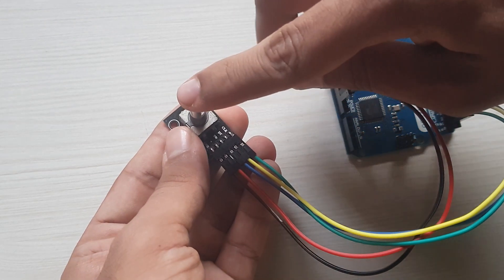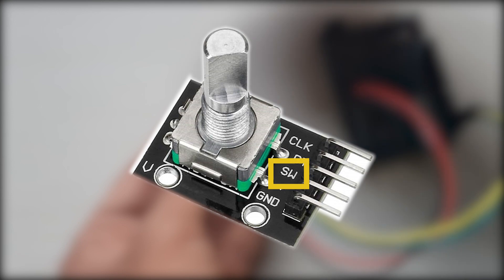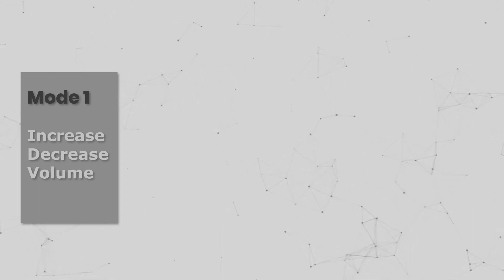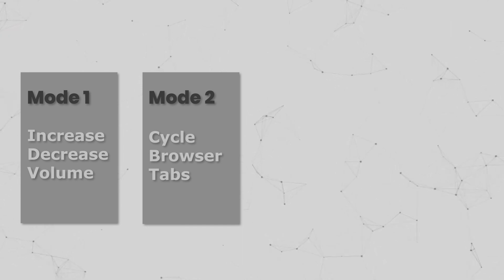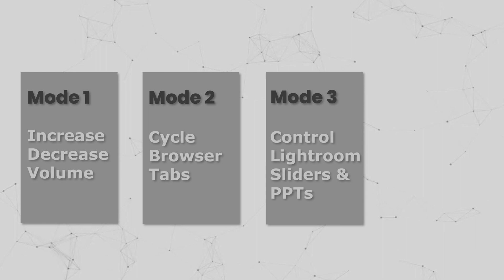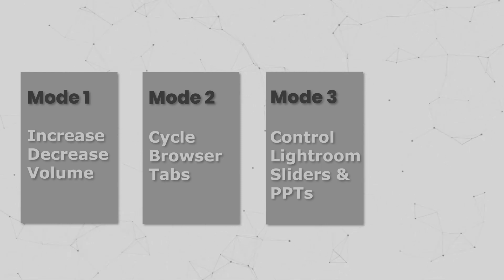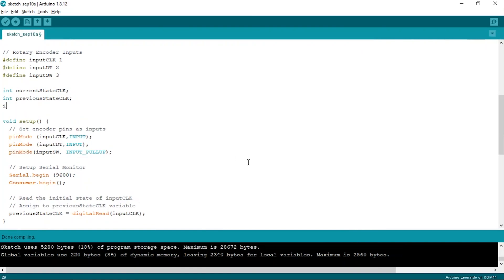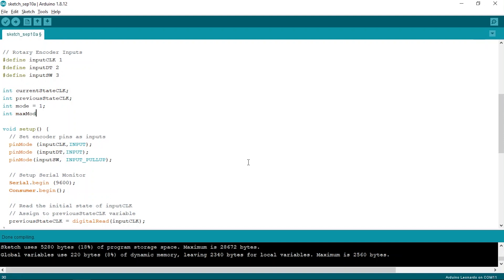The rotary encoder also has a button in it which can be pressed, and the value of this button can be read from the SW pin, which we have also defined in our code. So now let's define some different modes for our encoder. By default, mode 1 will be selected, which will increase or decrease the volume. When we press the button on the encoder, mode 2 will be selected, in which we will change the tabs of the browser. Then when we press the encoder button again, mode 3 will be selected, where we will add the functionality to control sliders in Lightroom and change slides in PowerPoint. And finally, in mode 4, we will increase and decrease the size of our brush in Photoshop. So back in our code, let's define an integer variable called mode to store the currently selected mode — initially the mode will be 1. Next, I'll define a variable called maxModes, which will store the total number of modes, which in my case would be 4.